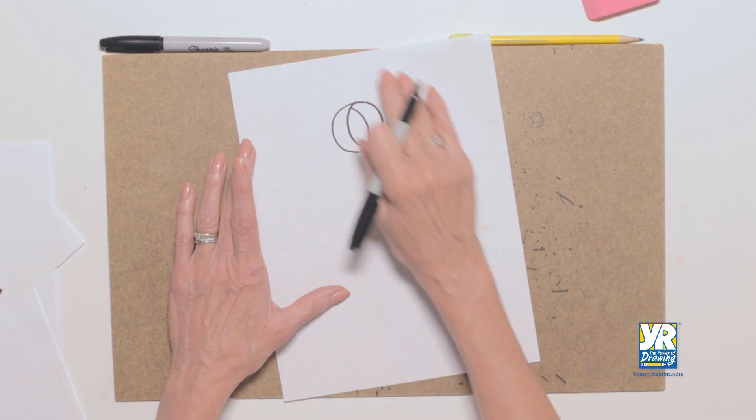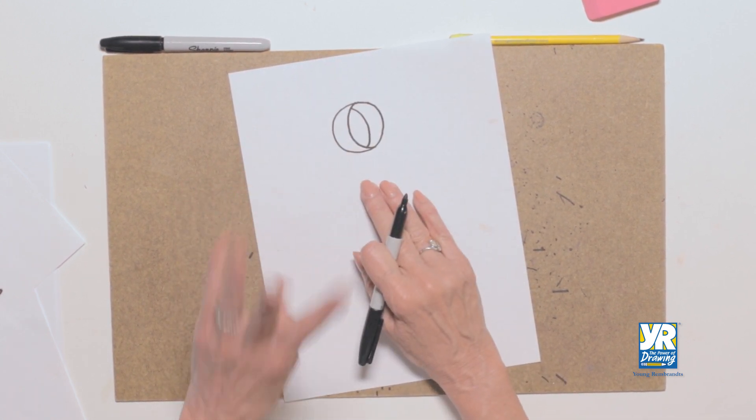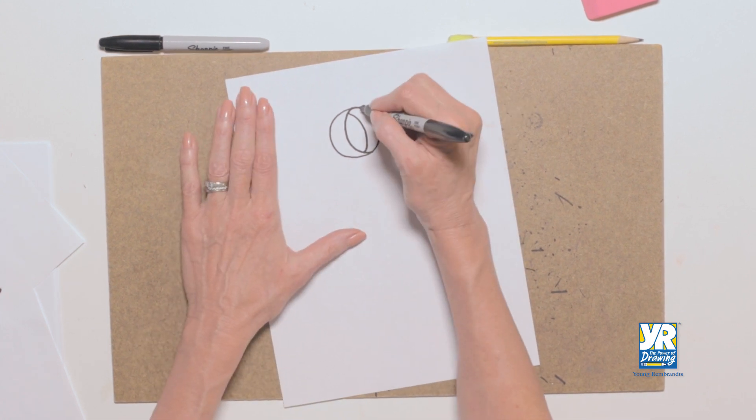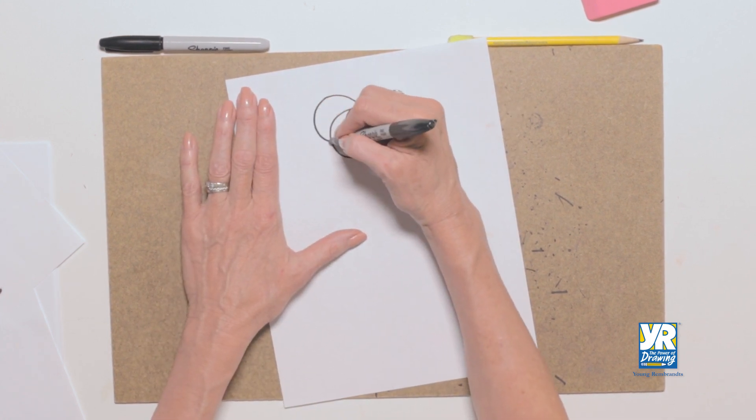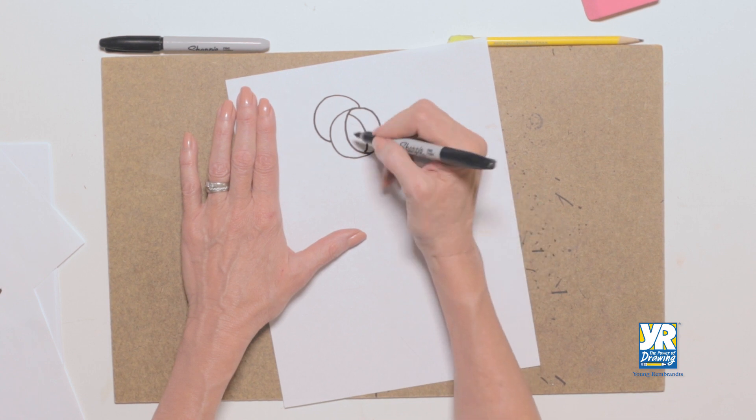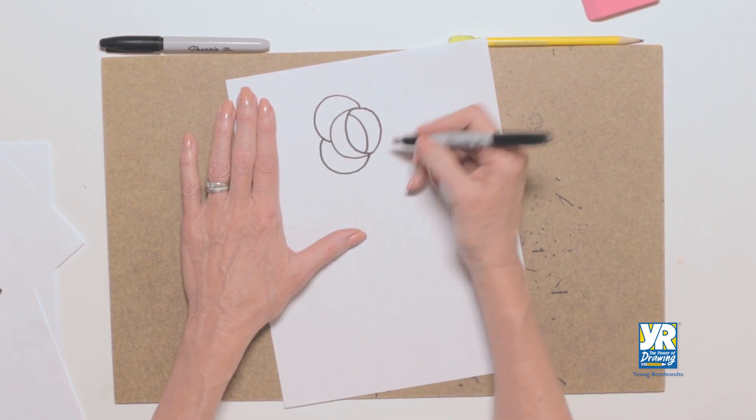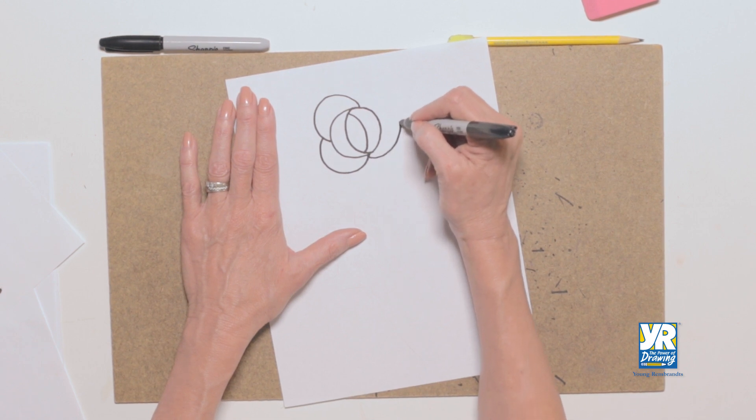Now when we add our petals we're gonna do it in threes. Artists like threes. Ready? We're gonna start with one petal. One. Now overlap a little bit. Two. We're gonna overlap just a little bit. Let's get them on this side. Three.